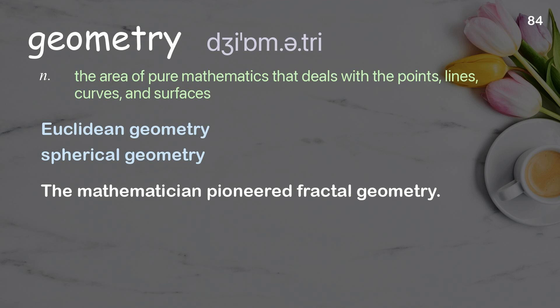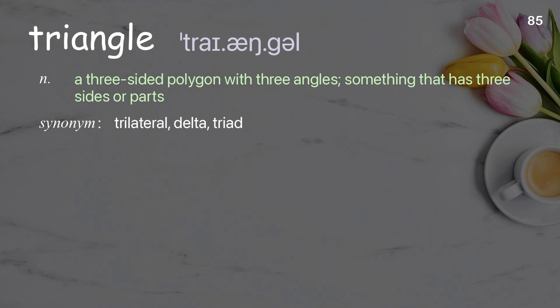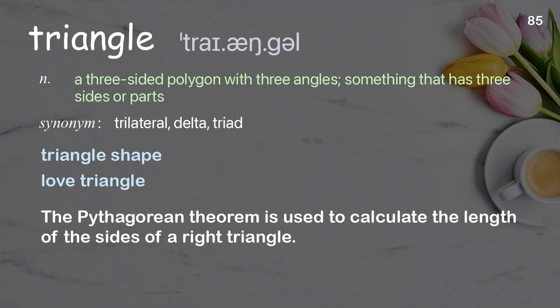Triangle: a three-sided polygon with three angles; something that has three sides or parts. Examples: triangle shape, love triangle. The Pythagorean theorem is used to calculate the length of the sides of a right triangle.